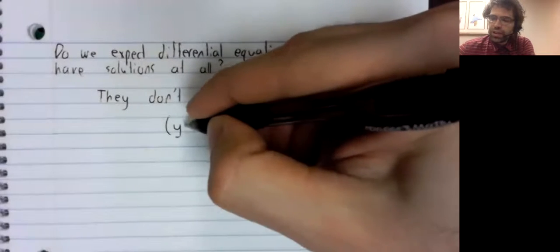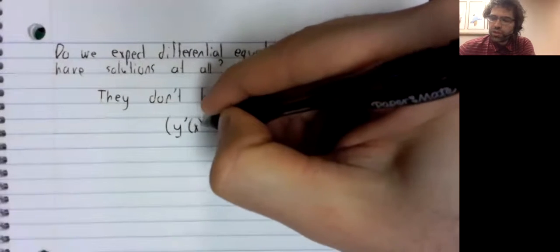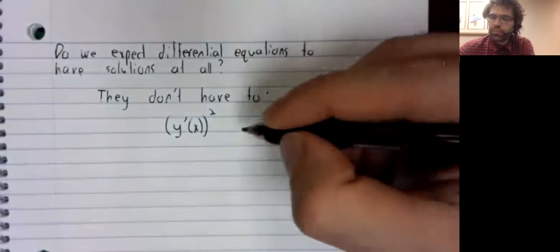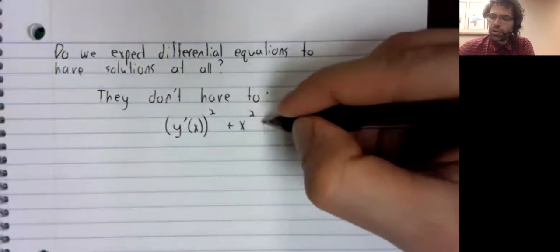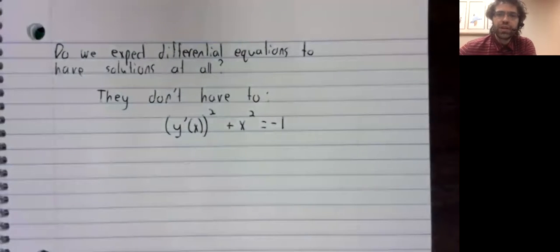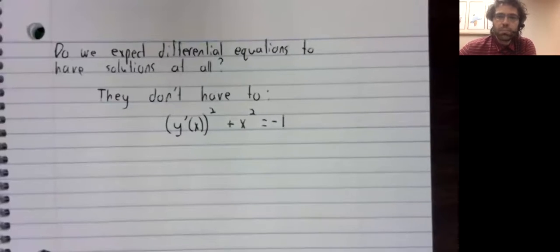The derivative of y with respect to x squared plus x squared equals negative one. Here is a differential equation that clearly, if we're looking at the real number line, has no solution.